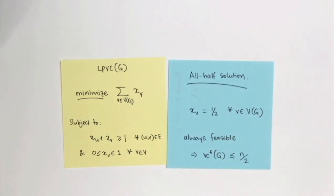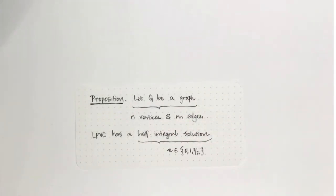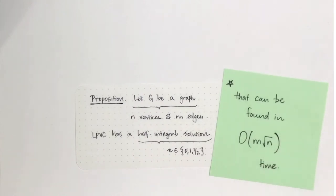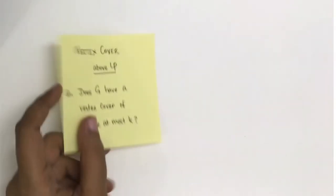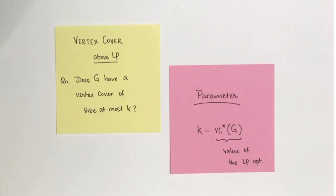The all-halves solution (every variable set to 1/2) is always feasible for the LP, so LP opt is never more than n/2. We also recall that there is always a half-integral optimal solution — where every variable is either 0, 1/2, or 1 — and such a solution can be found in O(m√n) time. Let's keep this in mind as we begin thinking about the algorithm with respect to our new parameter.